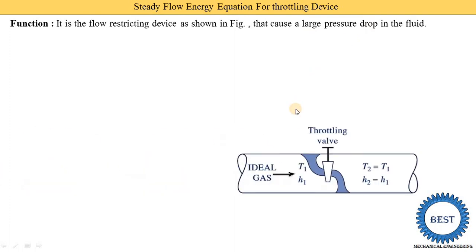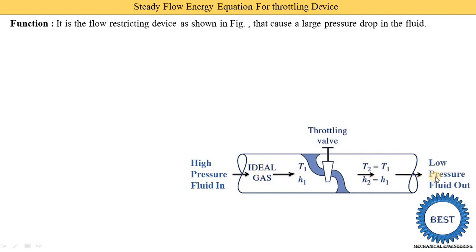Here you see this is the figure — this is the throttling valve. Here we consider the ideal gas. In the throttling device, one valve is placed. By this valve, we are able to control the area, and according to that, the fluid is passed. This is the inlet, means high pressure fluid enters the throttling device, and the fluid exits at low pressure.